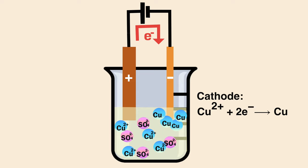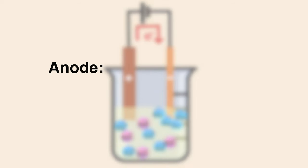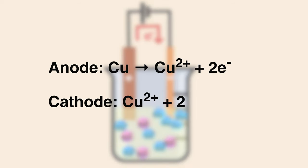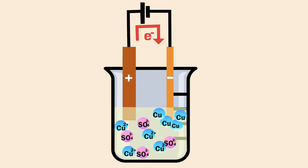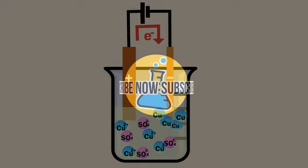Meanwhile, copper atoms in the positive anode give up electrons and dissolve into the electrolyte solution as copper ions. Overall, the only change that occurs in the cell is that copper atoms from the impure anode become copper ions in the electrolyte. Those copper ions are then plated out on the cathode. So any impurities in the anode are just left behind, and nearly 100% pure copper builds up on the cathode.